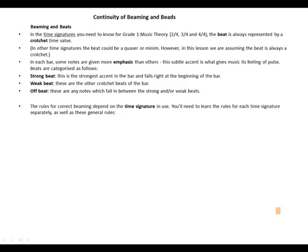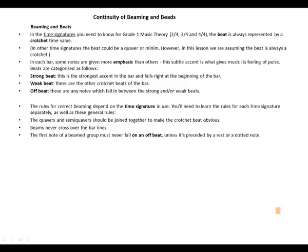The rules of correct beaming depend on the time signature in use. You will need to learn the rules for each time signature separately, as well as these general rules: quavers and semiquavers should be joined together to make the crotchet beat obvious; beams never cross over bar lines; and the first note of a beamed group must never fall on an offbeat unless it's represented by a rest or a dotted note.